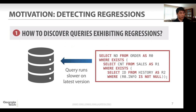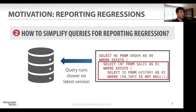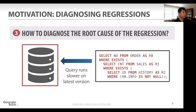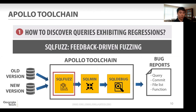We can observe several challenges. The first and most important one is how to discover queries with regressions. The second challenge is, when the user discovers some regression behavior, how to minimize the query down to the essence of the problem. If the user just sends a long query to the developer, the developer should spend time narrowing down the problem — so we wanted to automatically minimize the size of the query while maintaining the problem. The final question is how to diagnose the root cause of the regression automatically on the database systems.